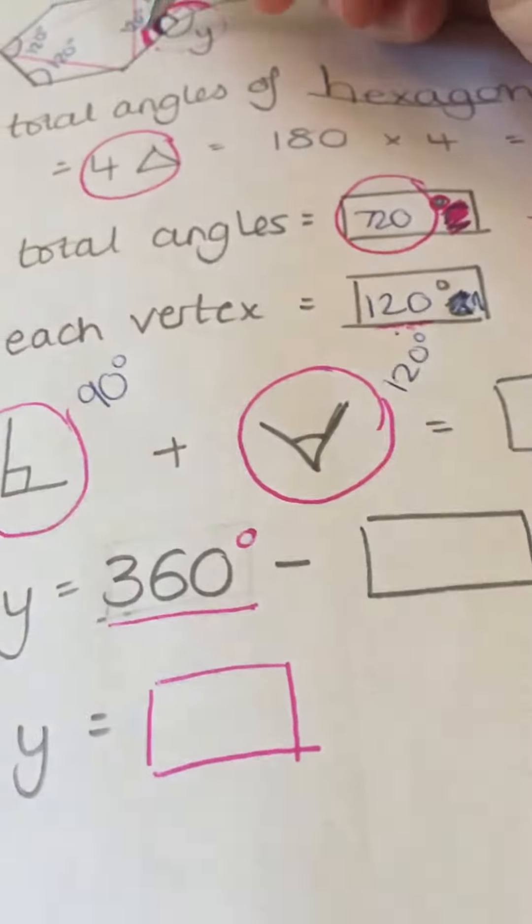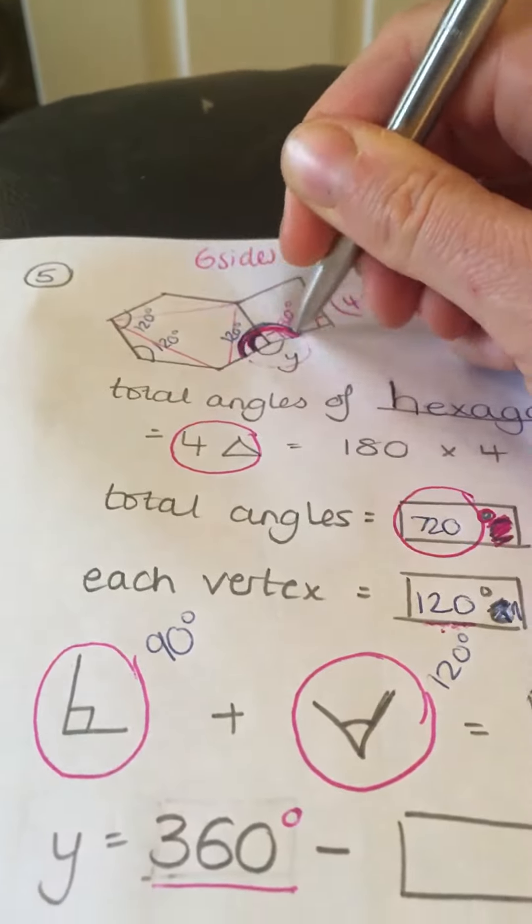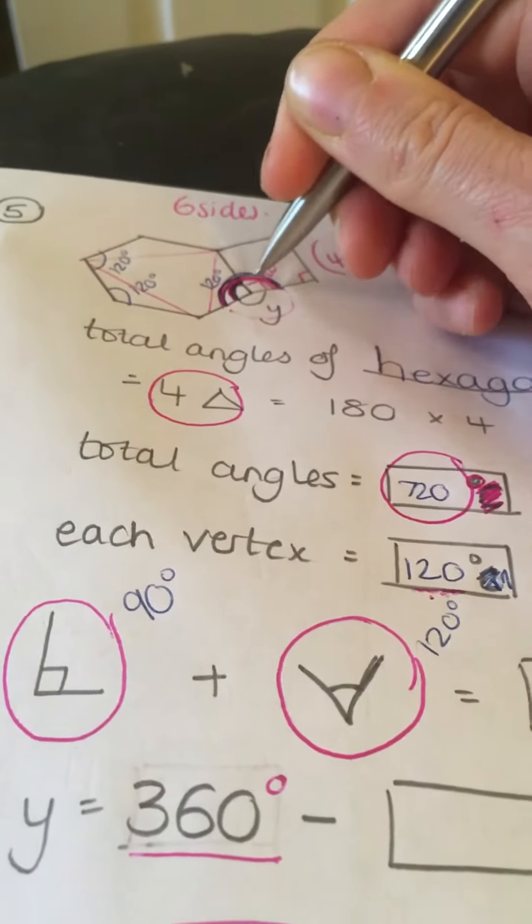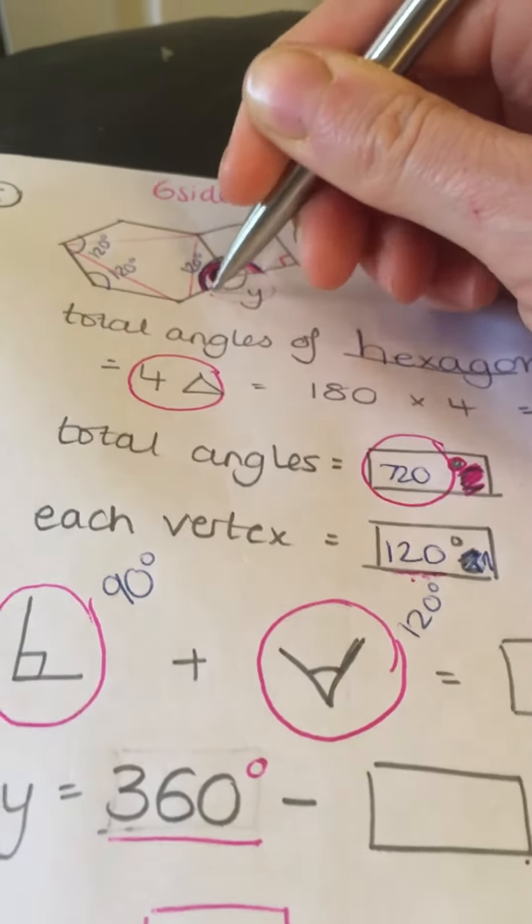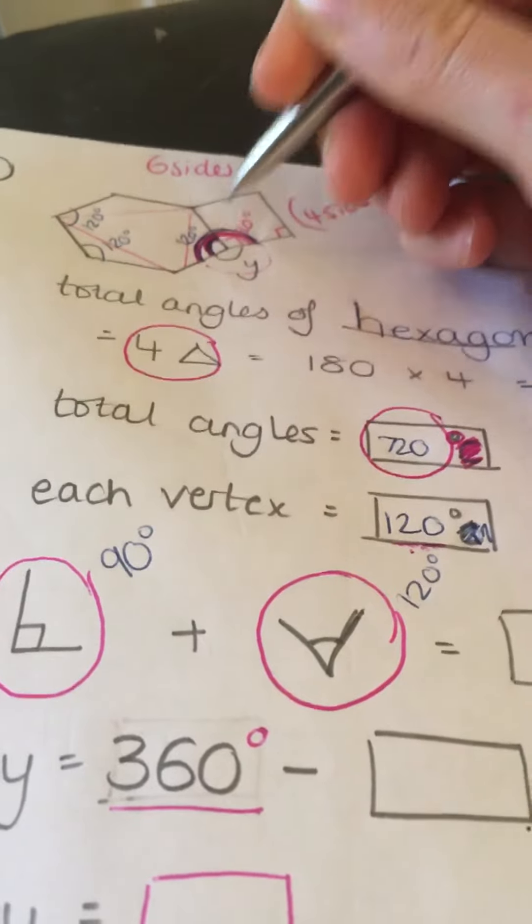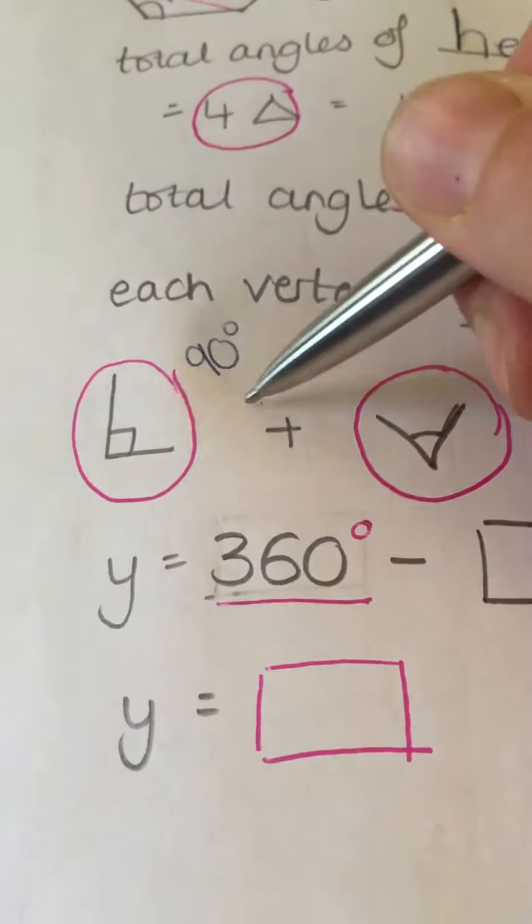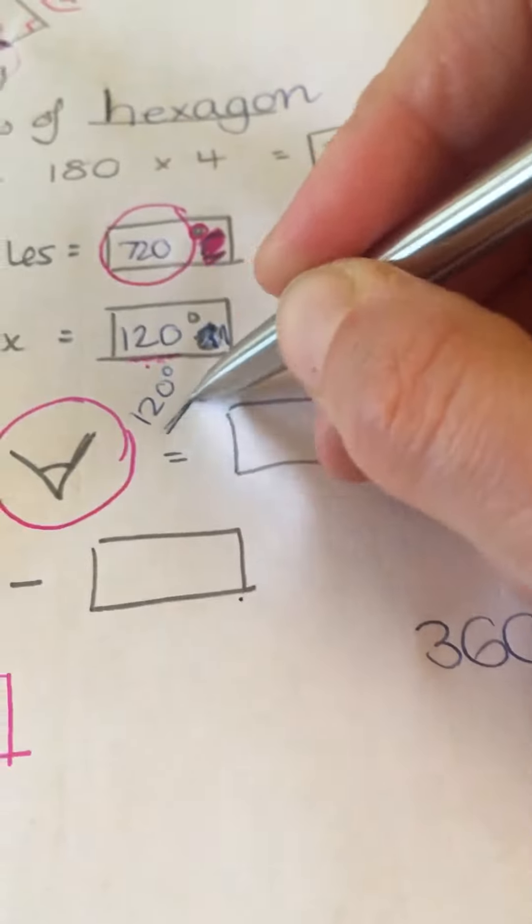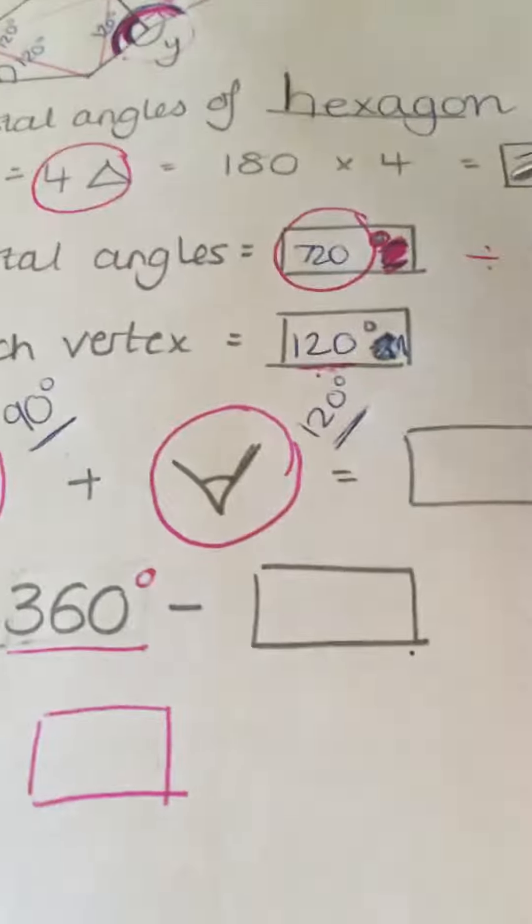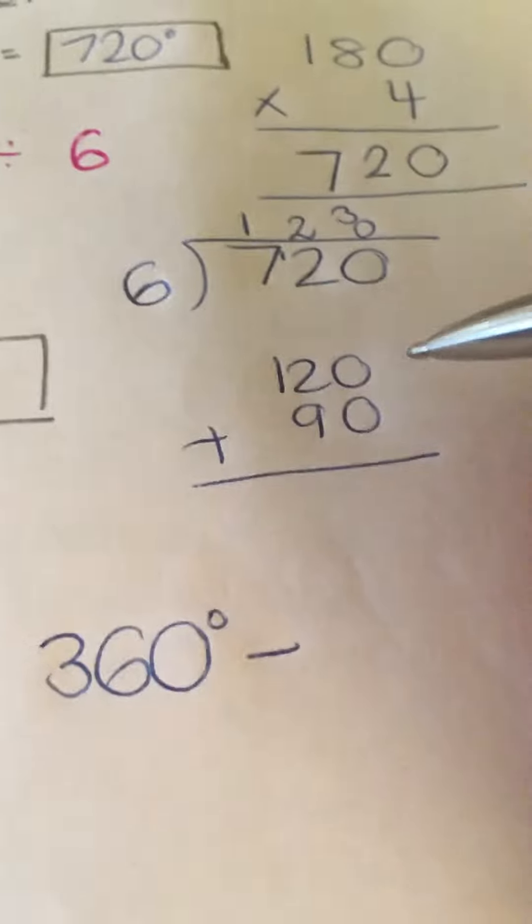So, now I need to work out what this entire angle is here. So, this angle, this right angle in the square, add the angle within my hexagon. So, I'm going to do 90, which is the right angle in the square, add 120, which is the angle inside the hexagon.